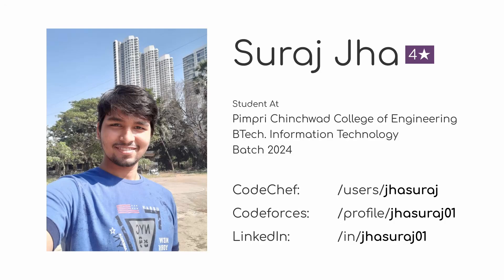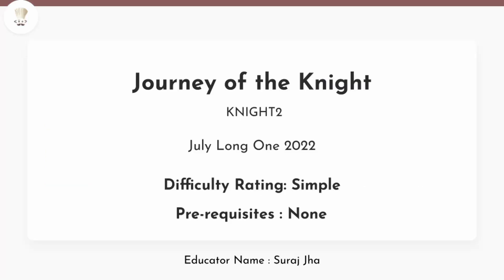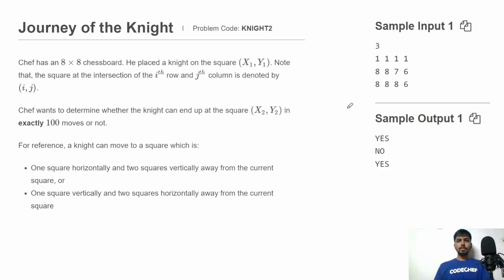Hello friends, welcome to CodeChef. This is Suraj and in this video let's discuss the problem 'Journey of Knights' from July Long Challenge 1, 2022. In this problem, we are given an 8x8 chess board and Chef places a knight on square (x1, y1). Chef wants to determine whether the knight can end up at square (x2, y2) in exactly 100 moves.